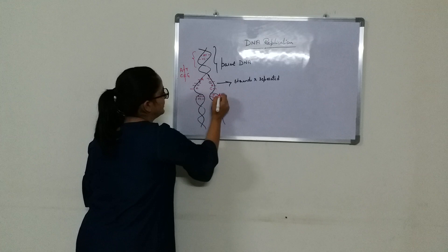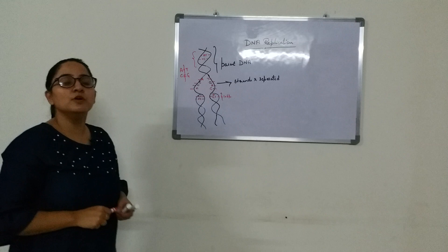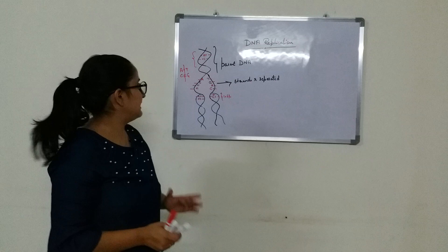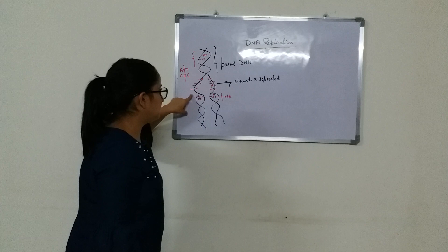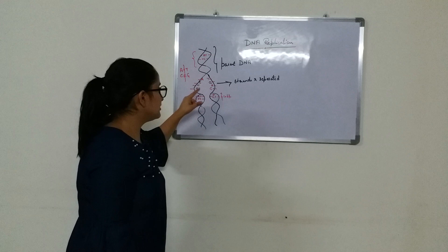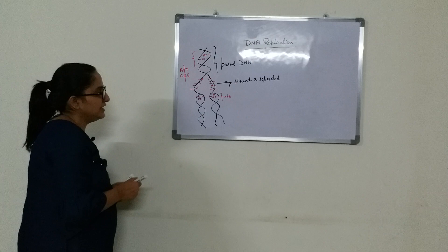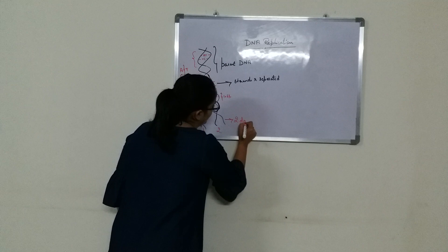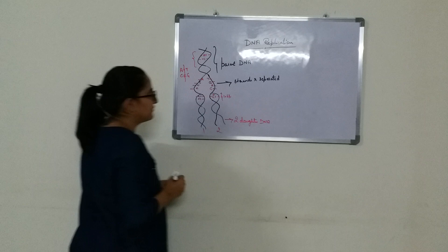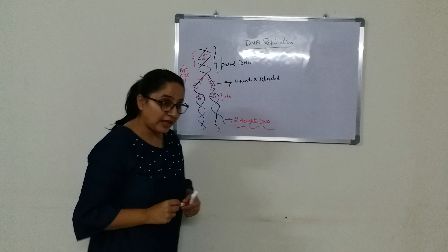After separation, two daughter DNAs are produced — again with ten base pairs each, just like the normal DNA. Simply put, the two strands of the parent DNA get separated, each strand acts as a template, and produces a new DNA. This is what is known as DNA replication, resulting in two daughter DNAs.